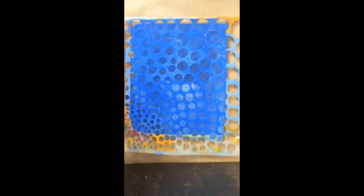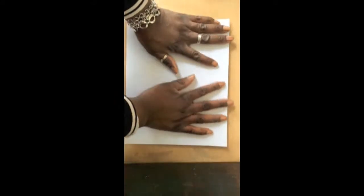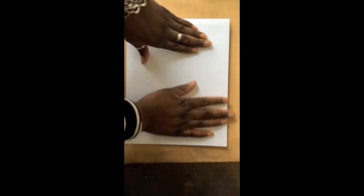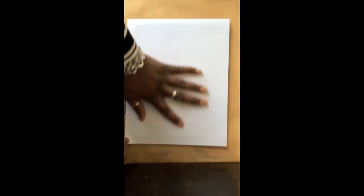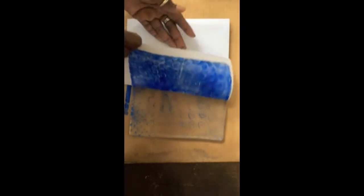Then what we can do is make something called a ghost print, which just utilizes the paint that's already on the jelly plate by adding another layer of paper on top, doing another print. And we can use this ghost print for another project.